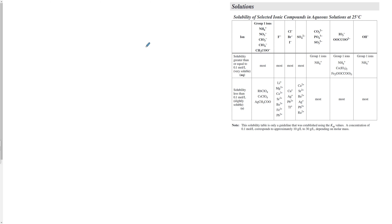Why would we want to do that? It leads into quantitative analysis. If we have a solution with a certain chemical we want to precipitate, we can make it turn into a solid, filter it, dry it out, and weigh it. Then, knowing the mass of the new solid, we can go backwards and find out how much of that ion was in the original solution.